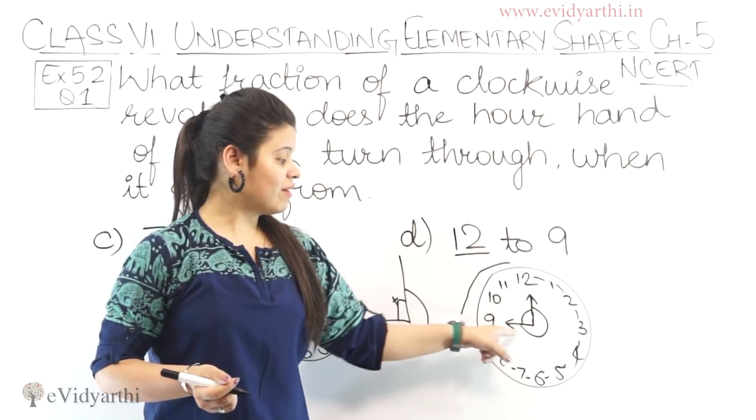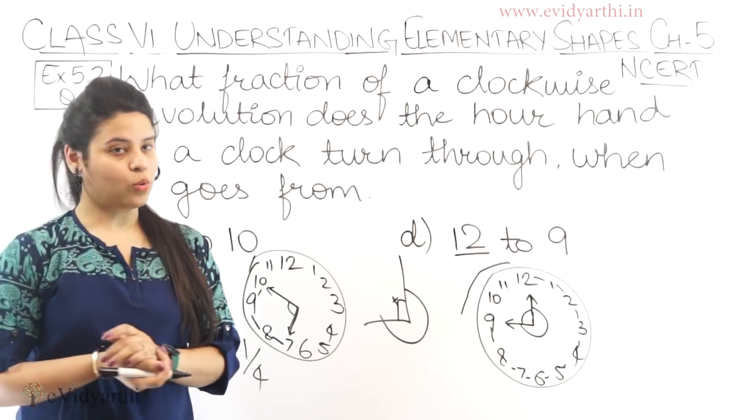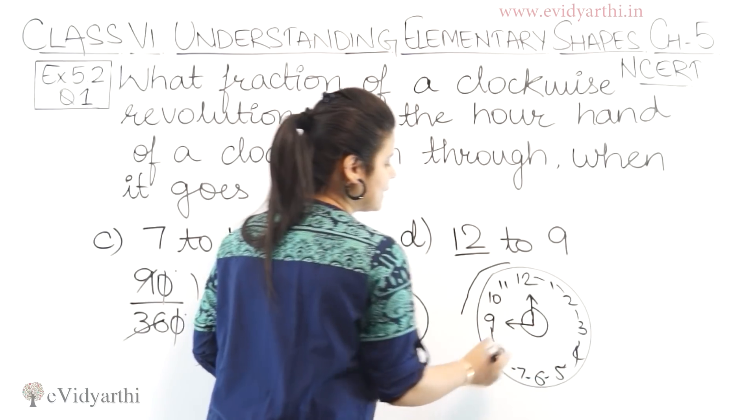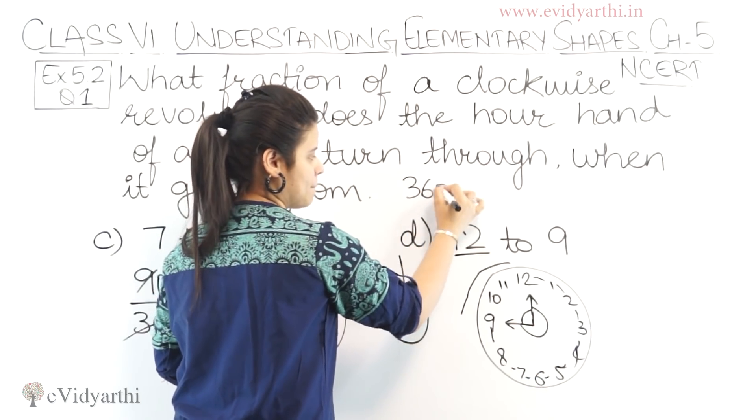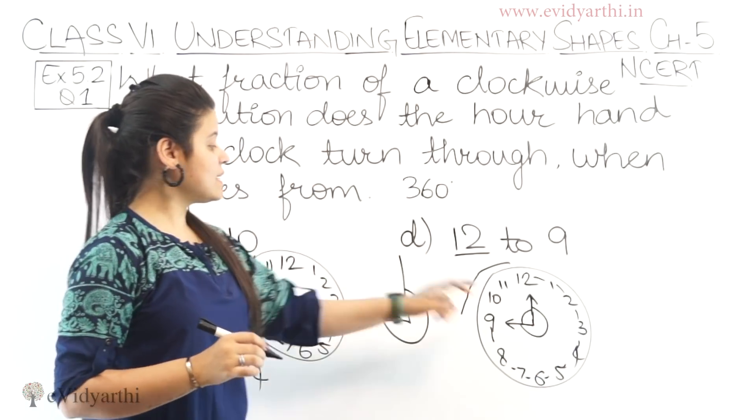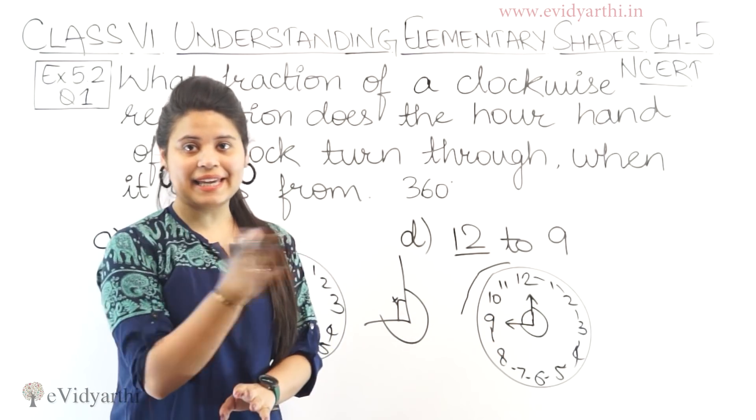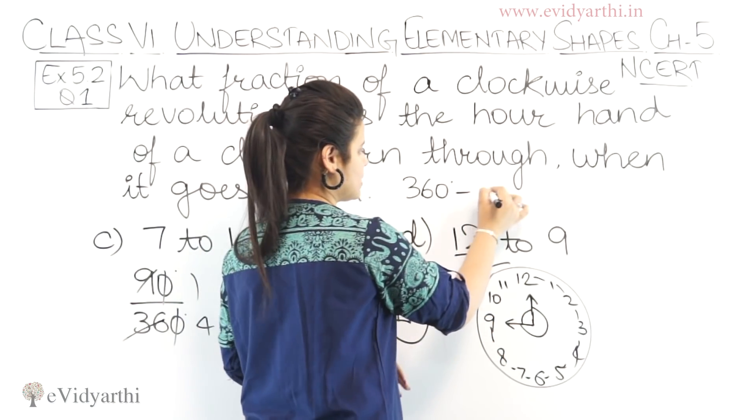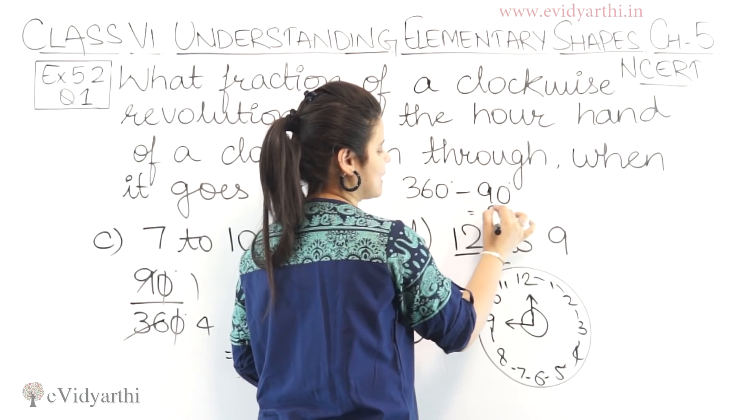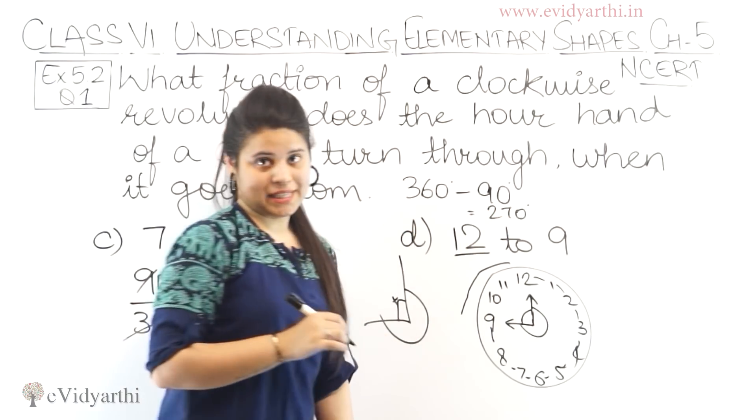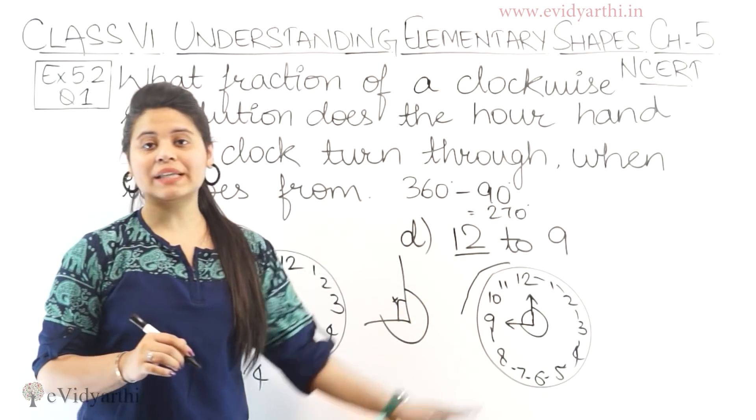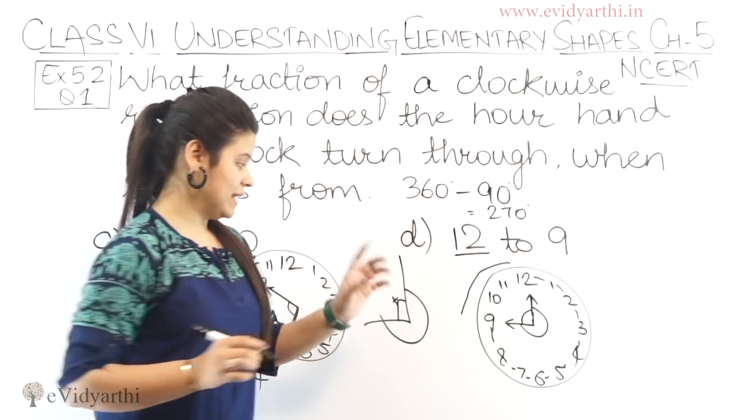Okay? This big angle, how many degrees will it be? Look. Total complete angle is 360 degrees. Right? 360 degree minus this 90 degree. So, 360 minus 90 degree is 270 degree. Matlab this angle that is forming is 270 degree.